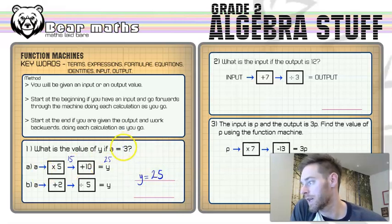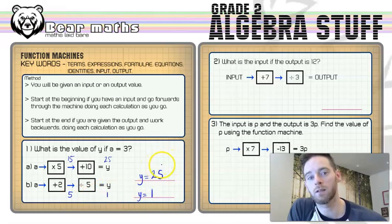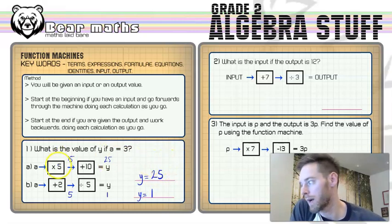In question B, I've got the same input value of 3, but we're going to do some different things to it. We're going to add 2 to it. 3 plus 2 is 5. And then 5 has to divide by this 5, and that will give you 1. So in this case, in B, Y would equal 1. You can see the different things that you do to the number as you go through the function machine give you a different output.